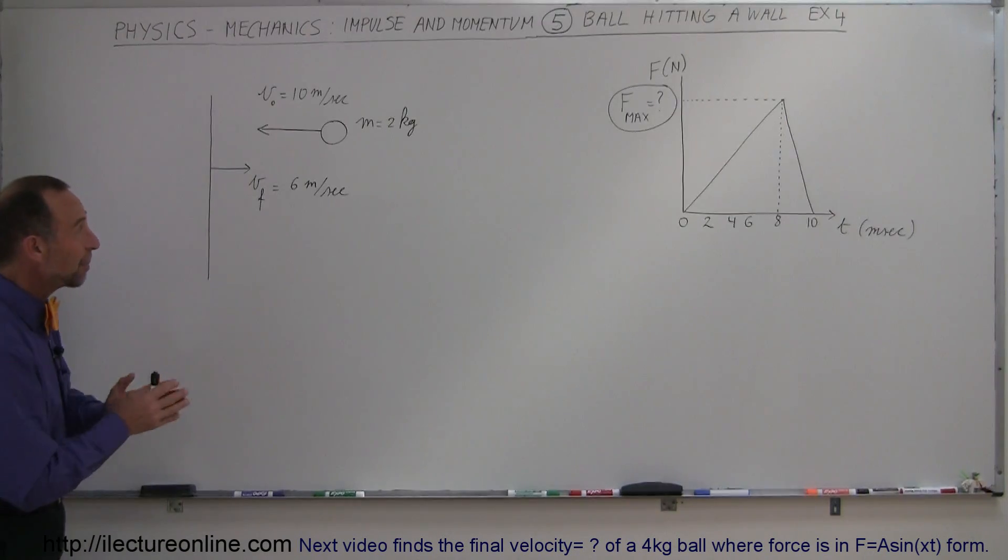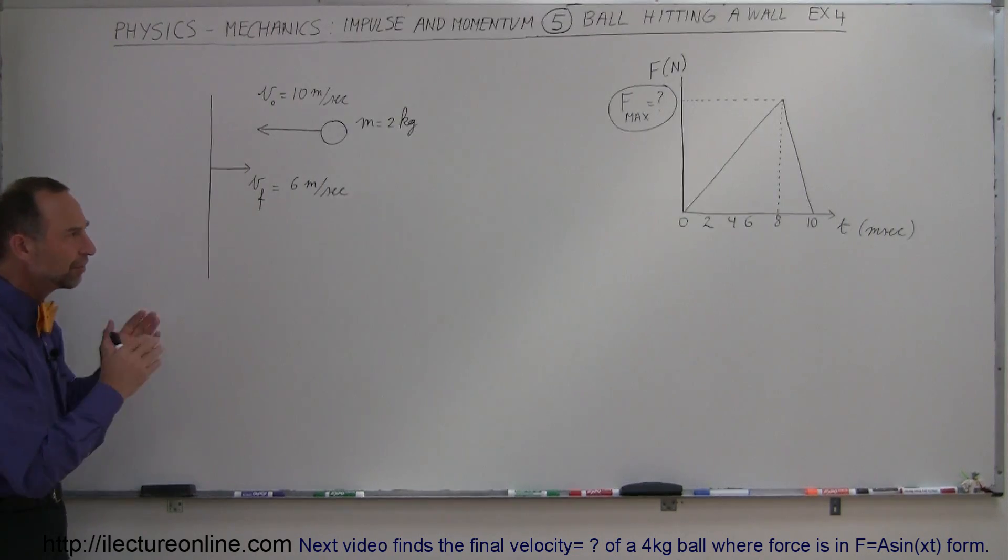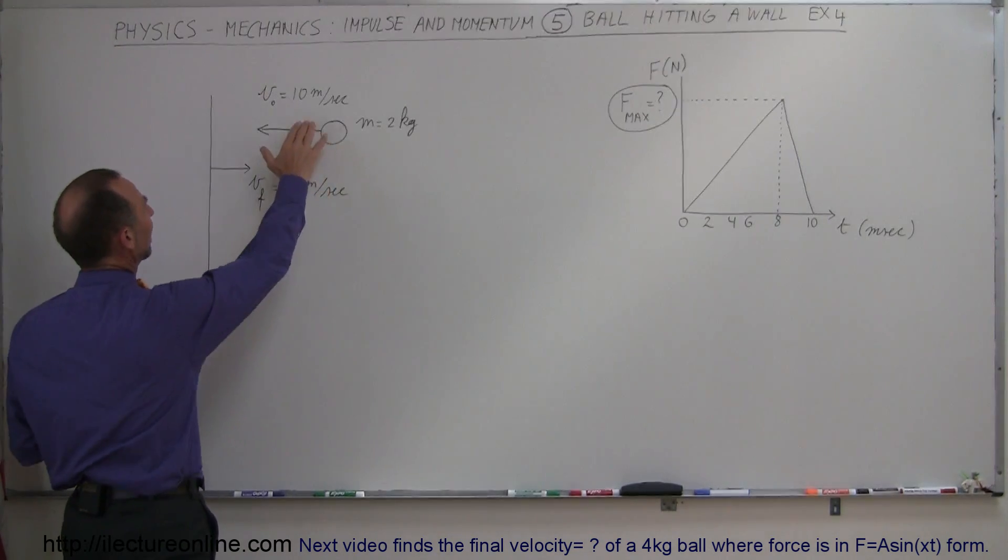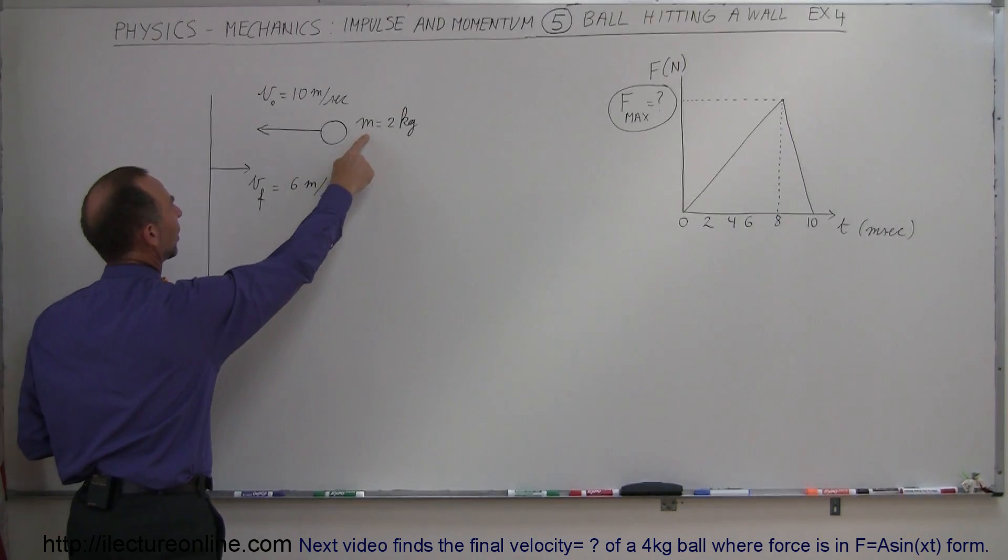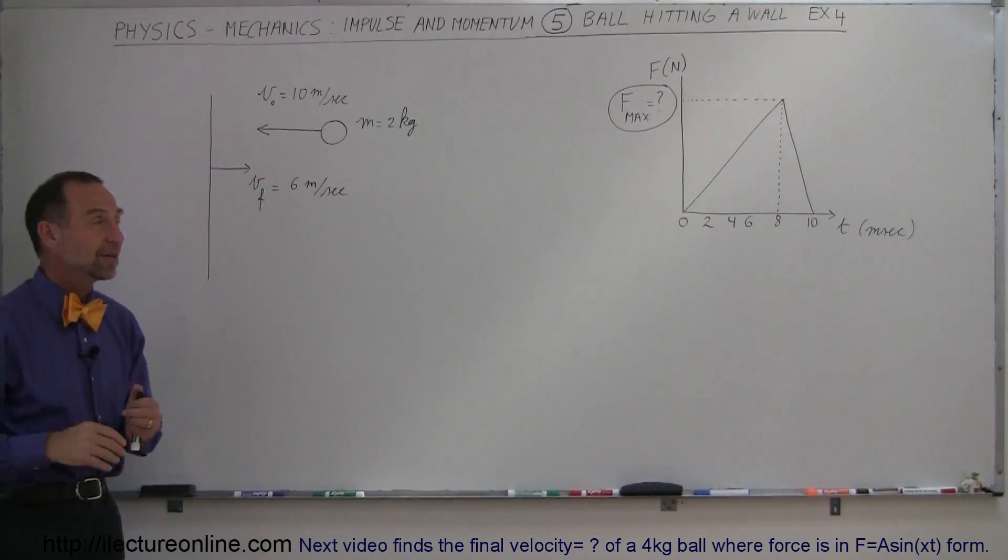Welcome to iLectureOnline and here's another example with a ball hitting the wall. We're going to look at the momentum and impulse, a little different spin on things here because the problem is given in such terms that we have an initial velocity to the left at 10 meters per second, the ball has a mass of 2 kilograms and has a final velocity to the right at 6 meters per second.